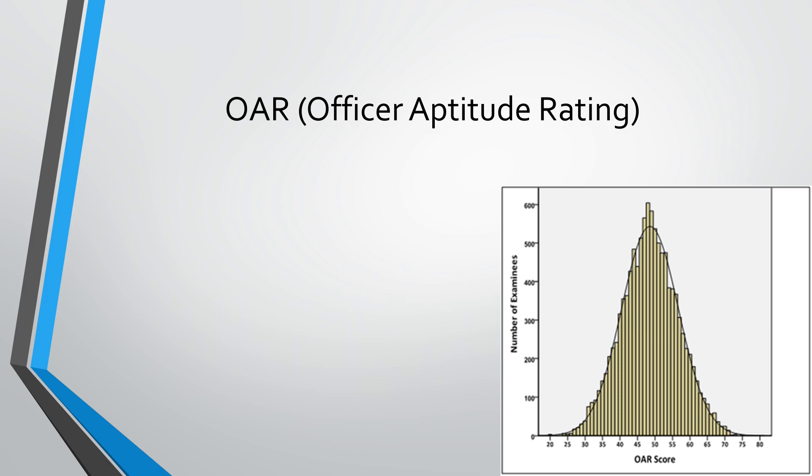So first off the OAR, what is it? This is your officer aptitude rating. This is basically accumulation of all three of your subtests that you take. The lowest you can get is a 20, the highest you can get is an 80, and the mean score for this is a 50. So if you're getting 50 and above, you're doing good for yourself. If you're getting 50 and below to maybe like a 40, you can still get picked up, but you may have some questions thrown your way. So try to score above 50 if at all possible.